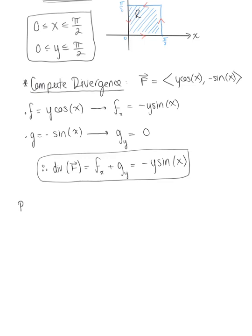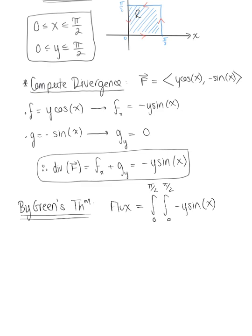So we can say, by Green's theorem, we know that the flux here is going to be equal to the integral, the double integral over R, so that's from 0 to π/2, 0 to π/2 of the divergence, which is -y sin(x). And then the order, because we're over a rectangular region, the order of integration isn't as critical, so pick your favorite.